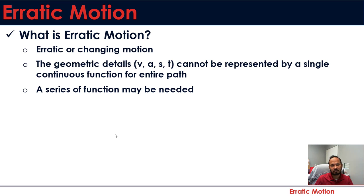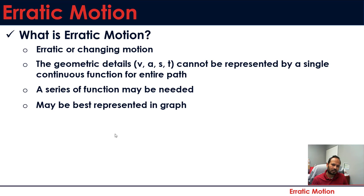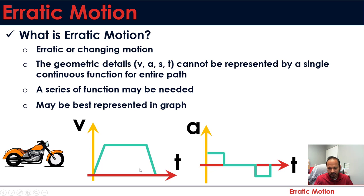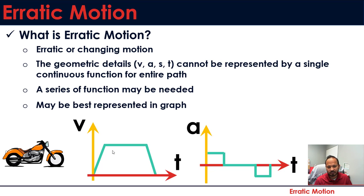A series of functions may be needed — more than one function — and in those scenarios it is easier to represent the motion in graphs. If you see the example here, with respect to time, a velocity is changing with constant acceleration, then after a certain time it becomes constant, and after a certain time again it's decelerating. There is not a single function that can define the entire path; you need three different functions, and this is easier to represent in a graph.